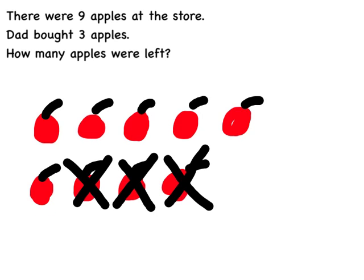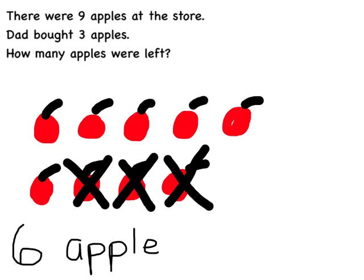So six apples were left at the store. Now when I write my answer, it should be in a complete sentence. And I know I can look here if I'm not sure how to spell words like apples were left. But the first thing I have to do is write the quantity or write the number. So my answer is going to say six apples were left.